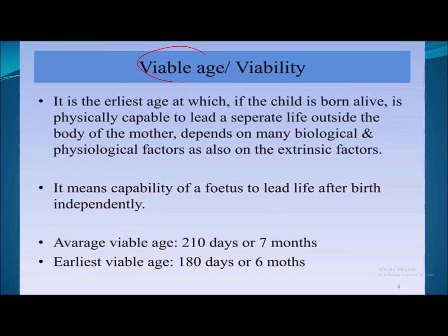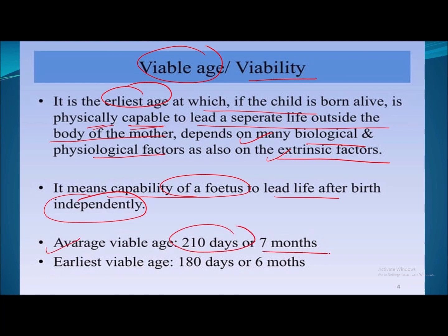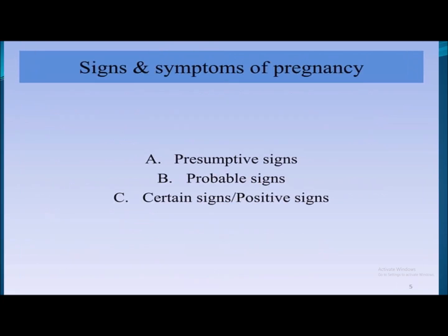Viability means the physical capability to lead a separate life outside the body of the mother. It depends on many biological, physiological, and extrinsic factors. The earliest age at which a child is born alive and is capable of leading a separate life outside the mother's body is known as the viable age. The average viable age is 210 days or seven months, and the earliest viable age is 180 days or six months.